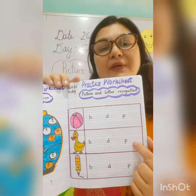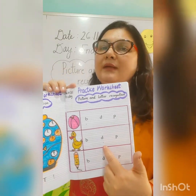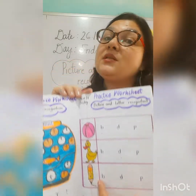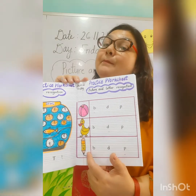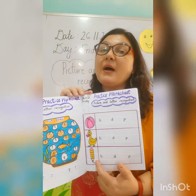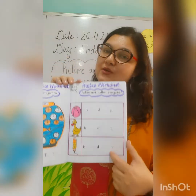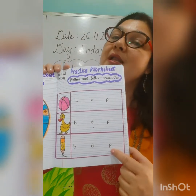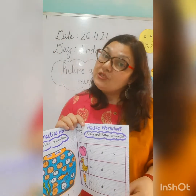And this is small p — isko circle karengi. Aur yahaan aap letter D likhenge. Now let's see the next picture. What is this children? This is a pencil. Kis ki initial sound aray hai? Letter P ki. So you have to circle the small letter P. Aur yahaan aap likhenge. So let's do this worksheet children.